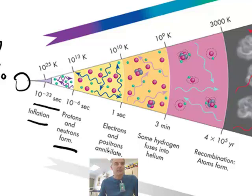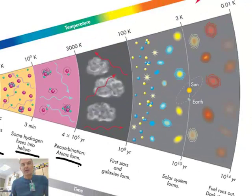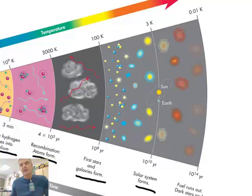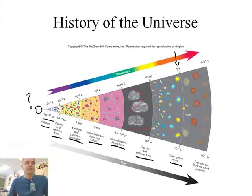Electrons and positrons annihilate, then we get hydrogen turns into helium, we get recombination, we get the first stars in the galaxies form, the solar system forms, and then, oh wait, what happens here? All right, we're like here right now, this is where we're at, background radiation of 3 Kelvin. This is the temperature of the universe, the background temperature, and they believe right now it's 3 Kelvin. And eventually it's going to get colder, fuel runs out, dark stars in the galaxies, and what's going to happen to the universe?